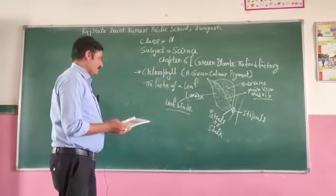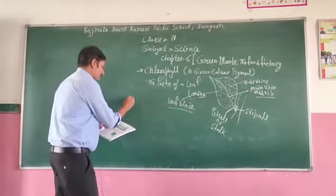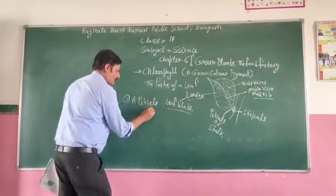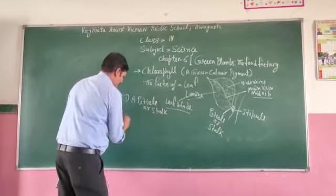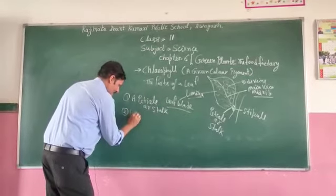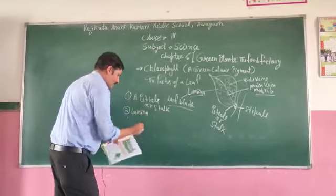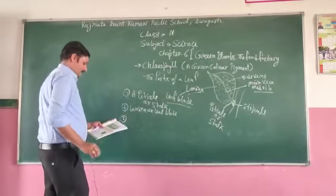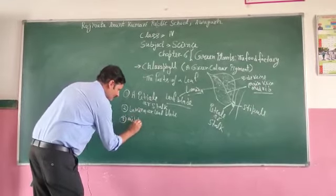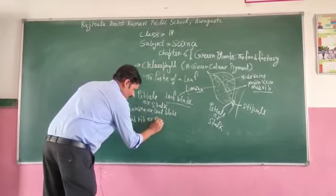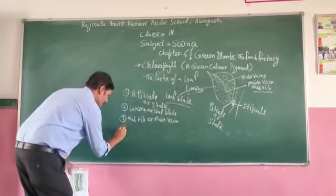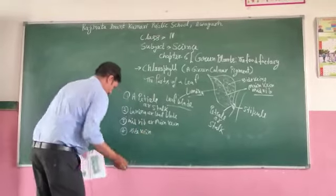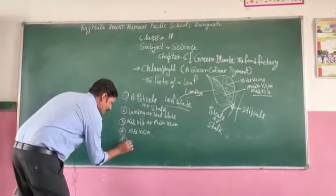These are the parts of a leaf: number one, the petiole; number two, the side veins or lateral veins; and the leaf blade, also called the lamina. Number two — lateral veins. Number five — stomata.